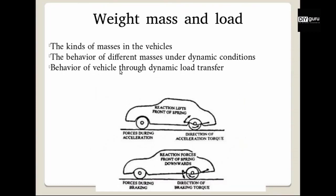Then we will talk about weight, mass, and load. There are different kinds of masses in a vehicle — and when I say different kinds, I don't just mean different shapes and sizes. These masses play different roles in the vehicle and its dynamics, and because they play different roles, they also have different behaviors under dynamic conditions. For example, when you accelerate, you tend to go back, but the tire does not go back or go up. So the tire and the vehicle body are two different kinds of masses and they behave differently under dynamic conditions. This is one of the most important topics in this course.